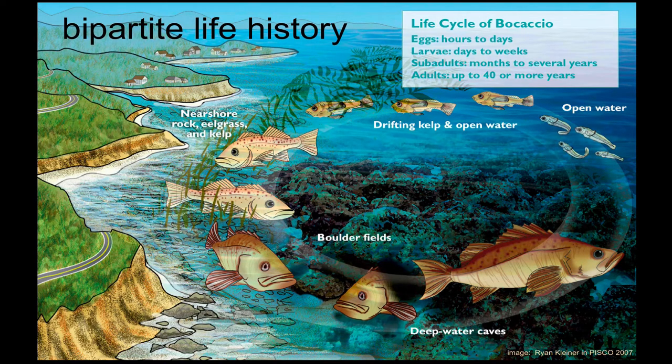First, let's make sure we're all on board with a key challenge for many of our aquatic, and in particular marine, critters. This is the notion of bipartite life history traits — two-parted life history traits — which describes so-called open populations, as opposed to a closed population.